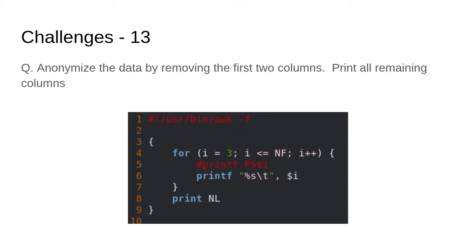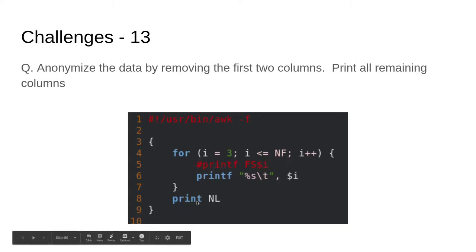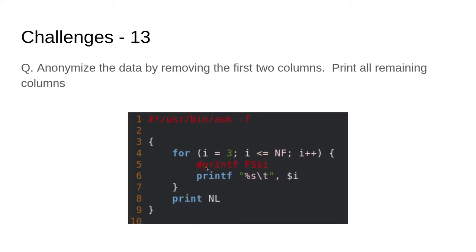We mentioned earlier that we could use a variable for referencing a field. We're going to start with the third column because the first two are names we don't want included. So we start a loop at column three and say i is less than or equal to NF — supporting an arbitrary number of fields. We increment at the end. Each time we go through, we call printf to print that column. Then at the very end we print a newline character. So we're basically printing all columns from column three and above, followed by a newline, using the output field separator variable to play well with the rest of the AWK world.